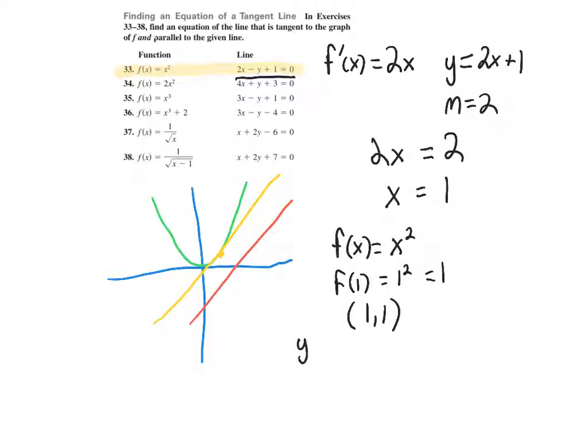So that is going to be y minus 1 equals m, which is 2, times x minus 1, which gives us y minus 1 equals 2x minus 2, or y equals 2x minus 1. And that is our answer.